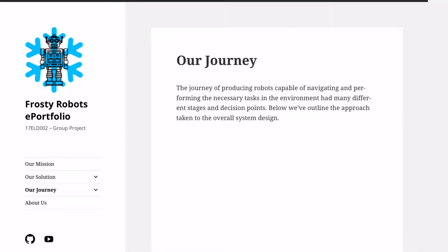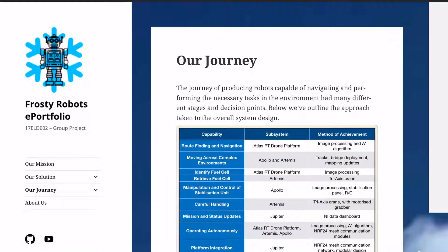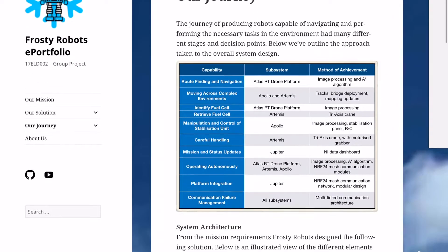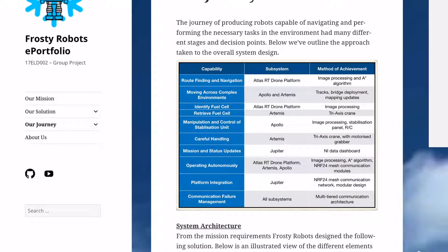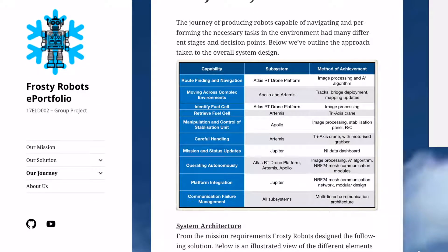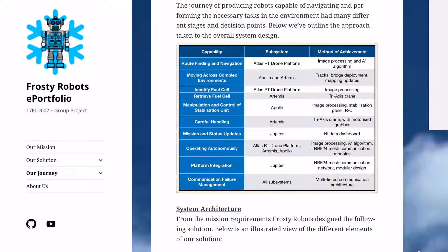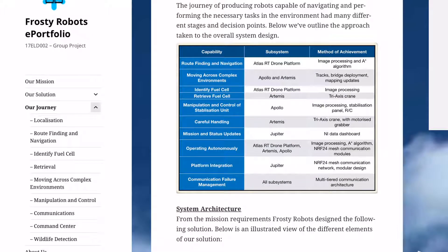The next tab is our journey. This details the capabilities and which of our subsystems are used to meet the capability, and the method employed for meeting that specific capability. Under this tab, there is further detail on each capability and how we progress towards achieving it.